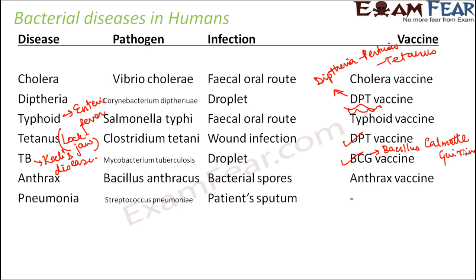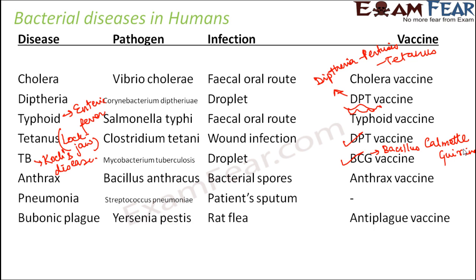Pneumonia is caused by Streptococcus pneumoniae. Infection happens through the patient's sputum, which is a mixture of saliva and mucus — the liquid that comes from the respiratory tract when coughing. Pneumonia spreads from one person to another through this sputum. Bubonic plague is caused by Yersinia pestis.